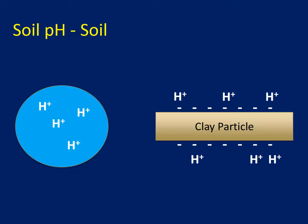This allows the lab to give recommendations for the amount of lime that should be applied to address both the soluble acidity and the acidity bound to clay particles. If we only made recommendations based on soluble acidity, there would still be residual acidity on the clay particles. By looking at both forms of acidity, we can make better recommendations for lime applications.